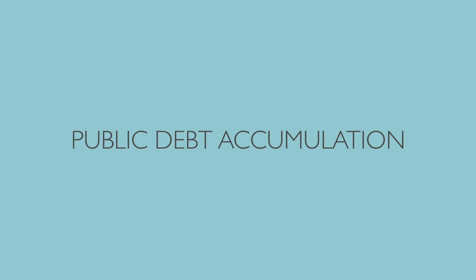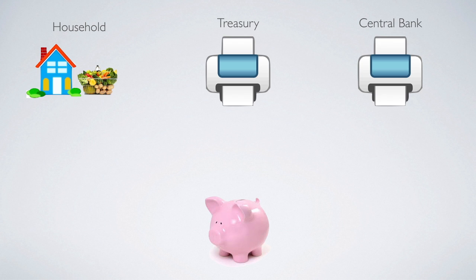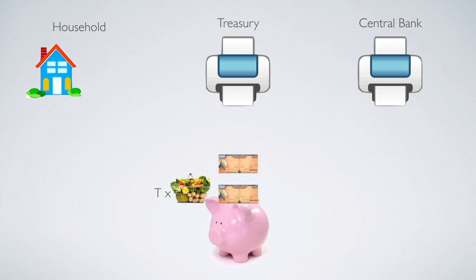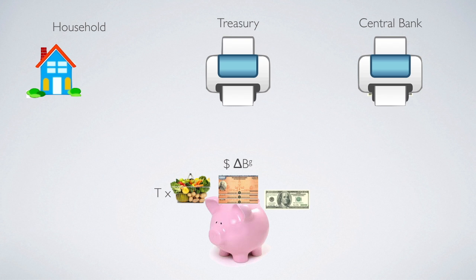First we start from public debt accumulation. To understand public debt accumulation, we know that there are three different sources for government revenue. First, government taxes households for a basket of purchasing power. Also, government can ask the treasury to print government bonds to issue new public debt, so to collect money from private households. And also, sometimes government can command the central bank to print money for its use. So these are the three sources that government can obtain its revenue for expenditure.